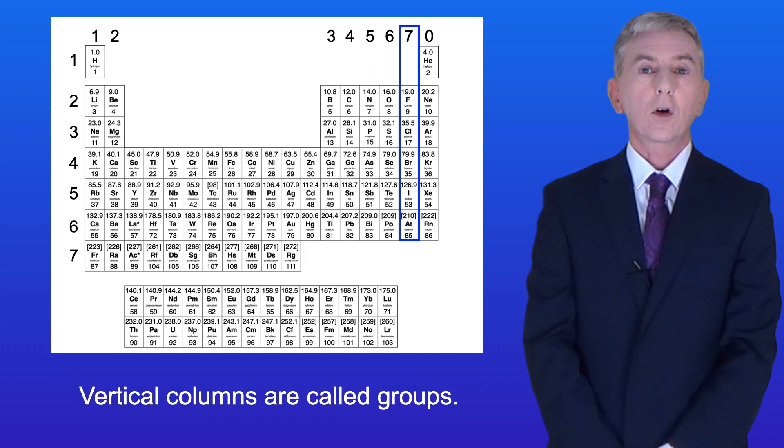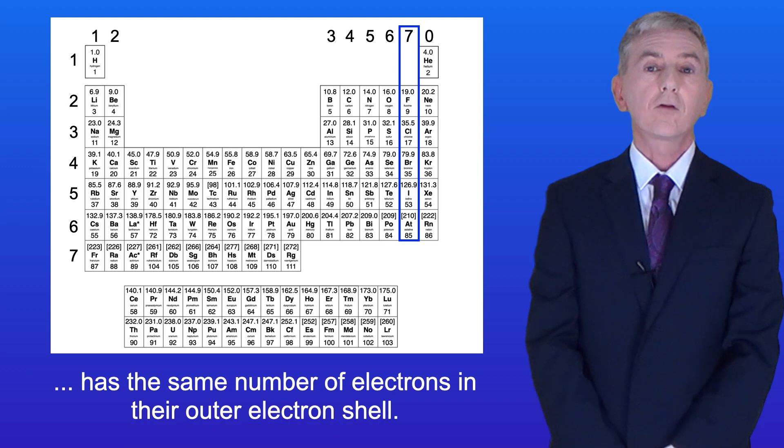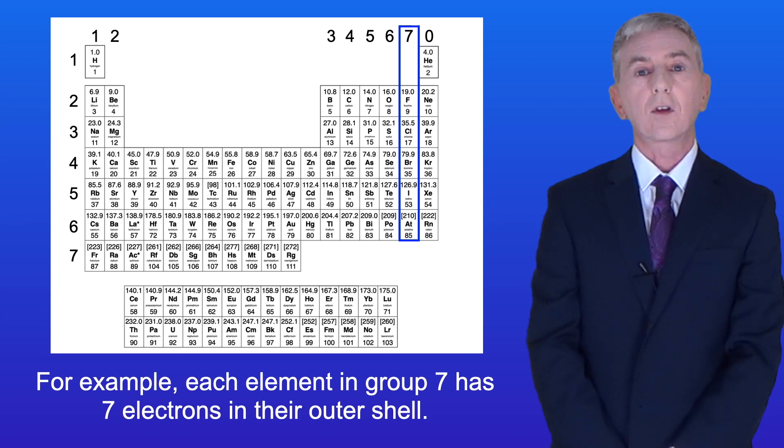Vertical columns are called groups. Each element in a group has the same number of electrons in the outer electron shell. For example, each element in group 7 has 7 electrons in the outer shell.